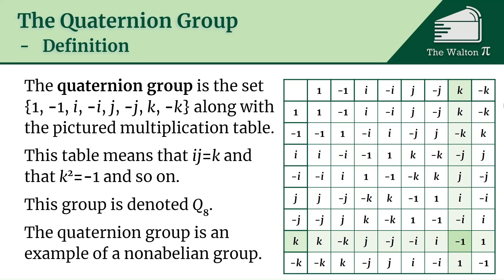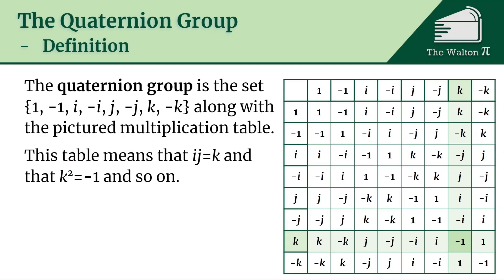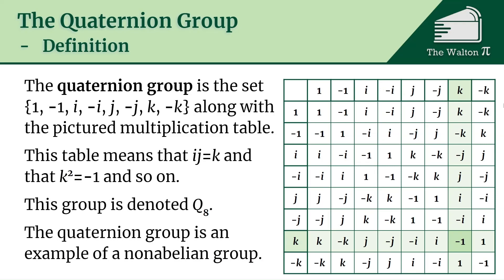So this group is denoted Q8. It's the quaternion group and it's an example of a non-abelian group because we can say i times j, if we look here, gives us k, but if we do j times i, that gives us negative k, and so these are different elements, and so this is an example of a non-abelian group.